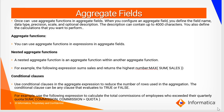Conditional clauses: use conditional clauses in the aggregate expression to reduce the number of rows used in the aggregation. The conditional clause can be any clause that evaluates to true or false. For example, use the following expression to calculate the total commissions of employees who exceeded their quarterly quota: sum of commission where commission is greater than quota.